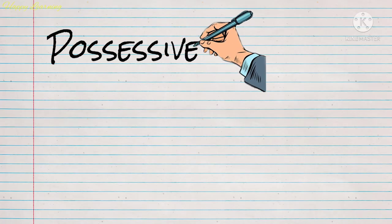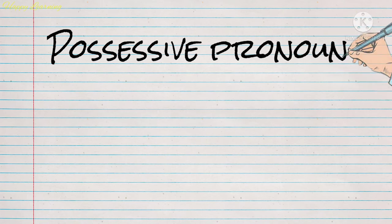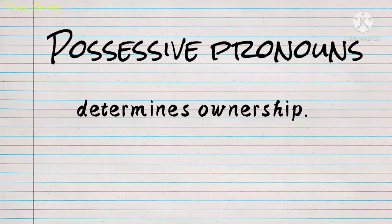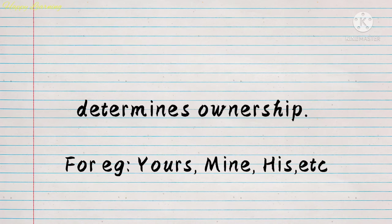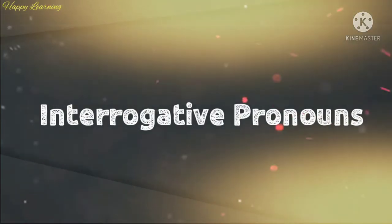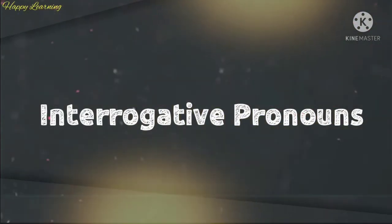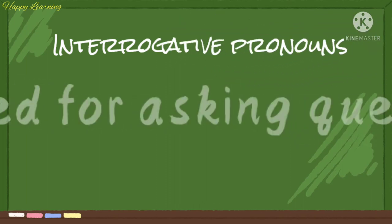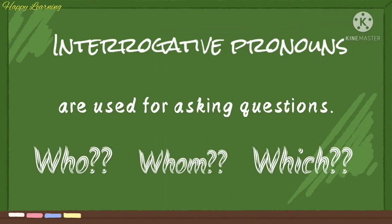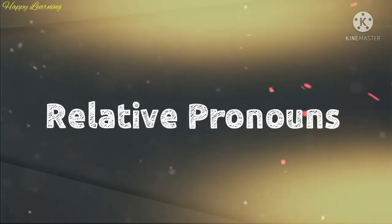Next come the possessive pronouns. Possessive pronouns define or determine ownership of something or someone. For example: yours, mine, his, etc. Then come the interrogative pronouns. As the name suggests, they are used for asking questions. For example: who, whom, which, etc.